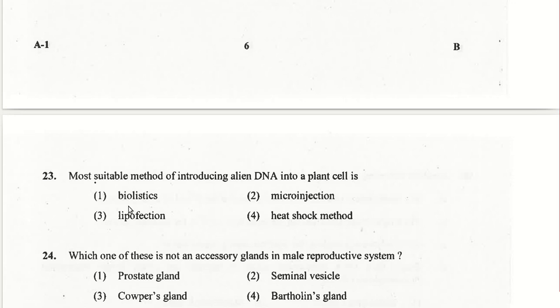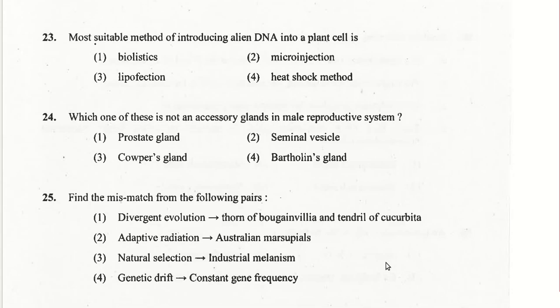The most suitable method of introducing alien DNA into a plant cell is by the biolistics method. Bartholin's gland is not an accessory gland in the male reproductive system.